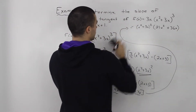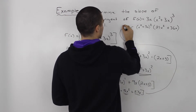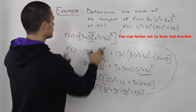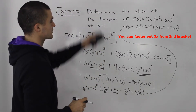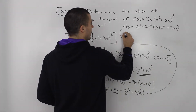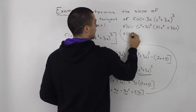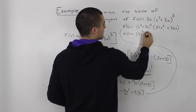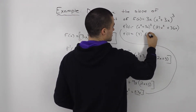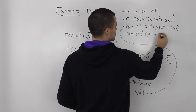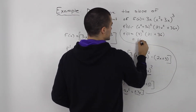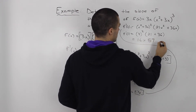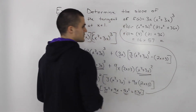So the whole thing simplifies to f'(x) = (x² + 3x)² times (21x² + 36x). That's the derivative of this function. We want the slope of the tangent at x = 1, so we plug in 1: (1² + 3) = 4, so 4² = 16. Then 21(1²) + 36(1) = 21 + 36 = 57. So we have 16 times 57.